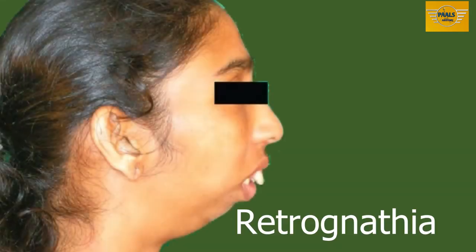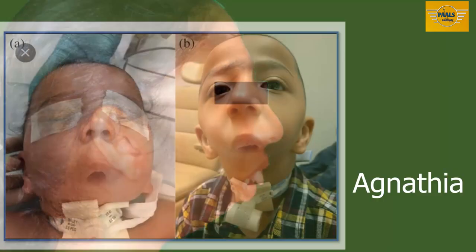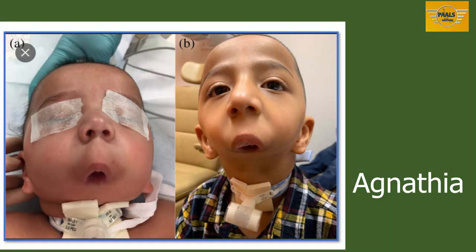We have anomalies associated with the development of the mandible. The first is retrognathia, which is a case where the mandible may be small compared to the rest of the face, resulting in a receding chin. In other extreme cases, we can have a total failure of the mandible to develop, and this condition is called agnathia, where there is a failure of development of the entire mandible.